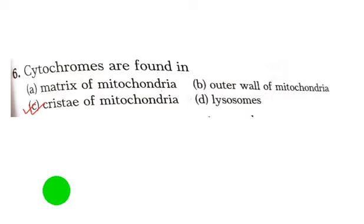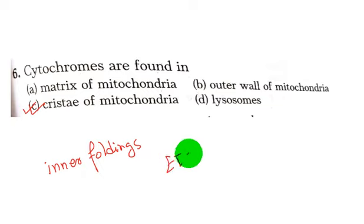Cytochromes are present on the Cristae in the inner foldings of a mitochondria. Cytochromes are iron containing proteins primarily responsible for transport of electrons in ETC.